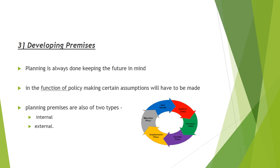The third step is developing premises. Planning is always done keeping the future in mind; however, the future is always uncertain. In the function of policymaking, certain assumptions will have to be made. These assumptions are the premises, made in the form of forecasts, existing plans, and past policy. Planning premises are of two types: internal and external. External assumptions deal with factors such as political, social-environmental, technological advancement, competition, and government policies.